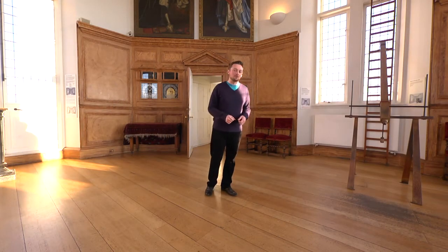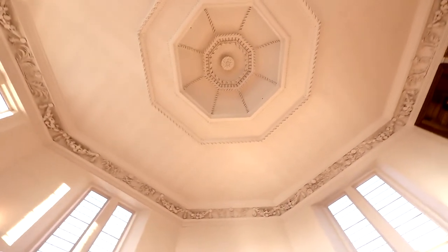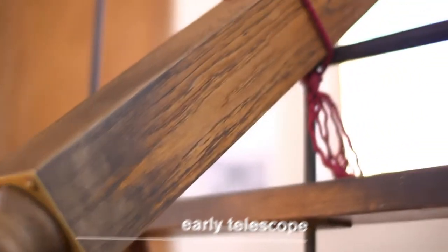I'm here in the Octagon Room at the Royal Observatory Greenwich and this is a very special room because it's where the astronomer royals of old once looked through their early telescopes at amazing things like the shadows of the mountains on the moon and rare events like comets and asteroids.